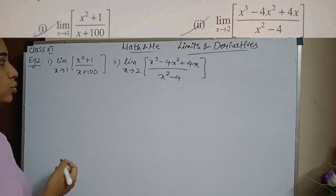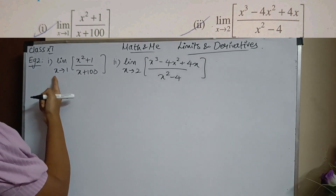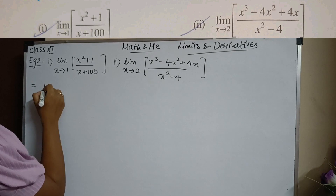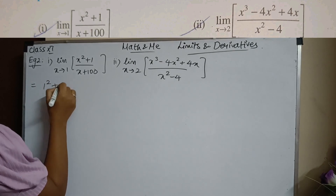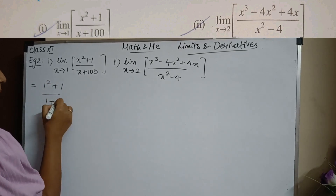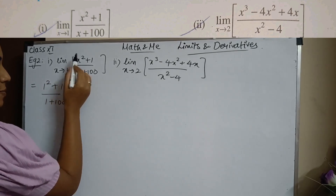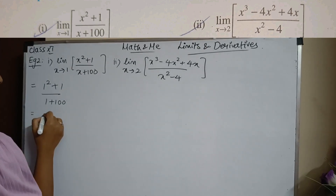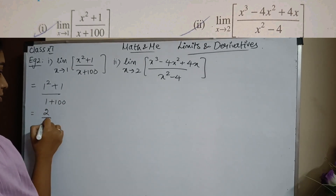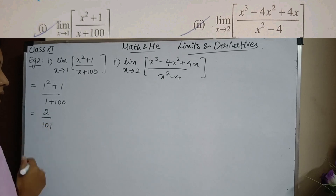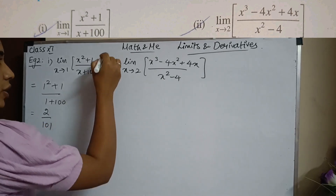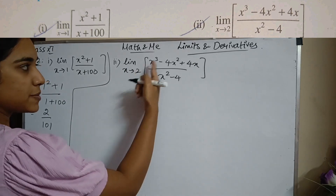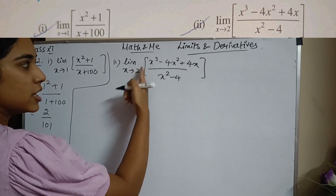Moving on to example 2: as x tends to 1 of some function, I'll simply substitute the value. I have 1² + 1 divided by 1 + 100. So 1 square is 1, 1 + 1 = 2, giving 2 divided by 101.